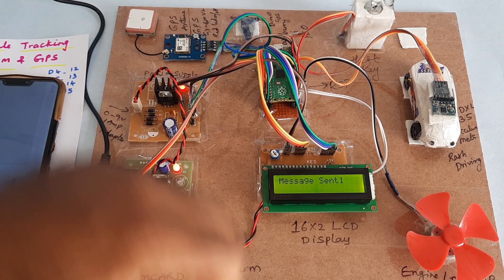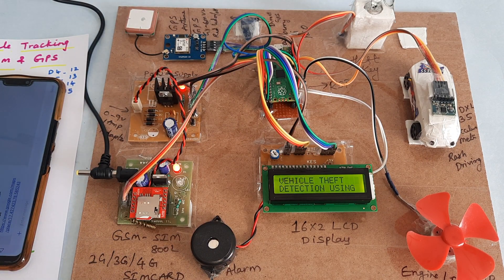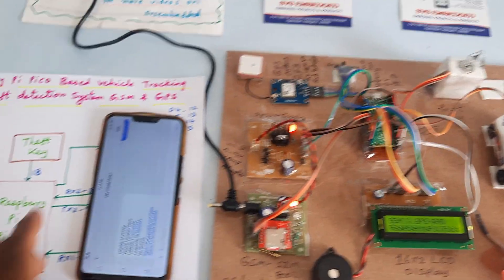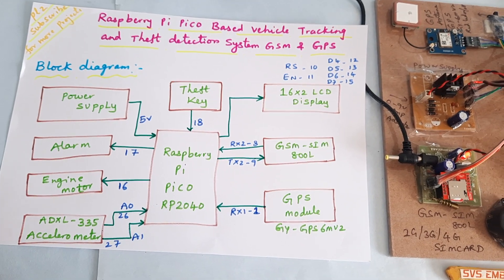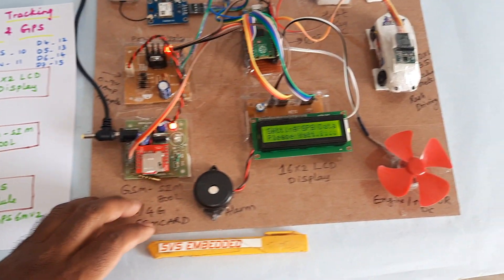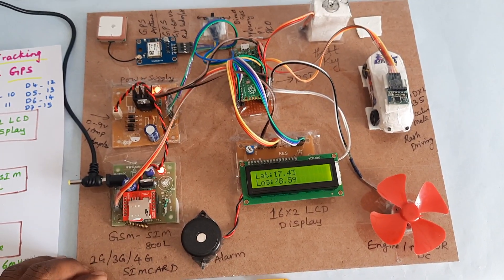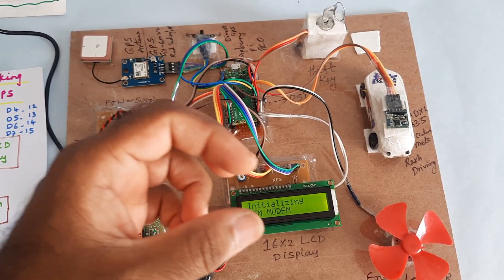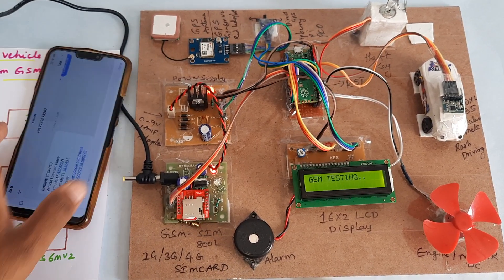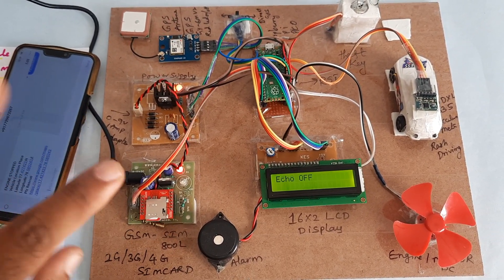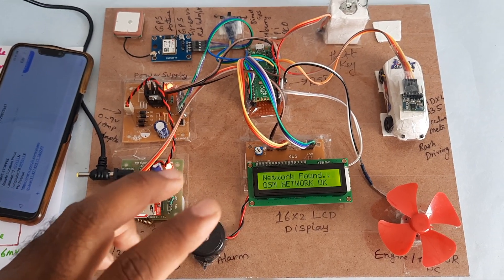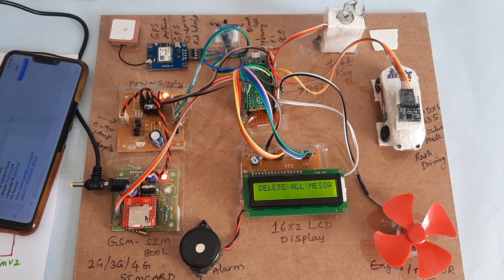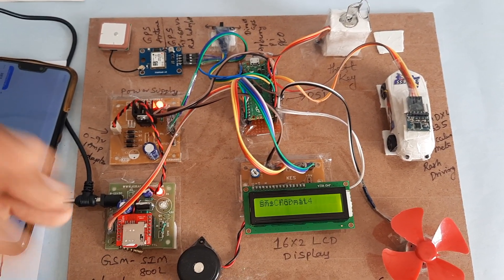Thank you. There is a reset button to restart the system. In this vehicle theft detection system using GSM and GPS, future enhancements include adding an alcohol sensor and an ESP32 camera module. When theft is detected, the ESP32 camera will capture a photo and send it as a Telegram alert or email alert. The alcohol detection feature will also indicate whether the driver has consumed alcohol.